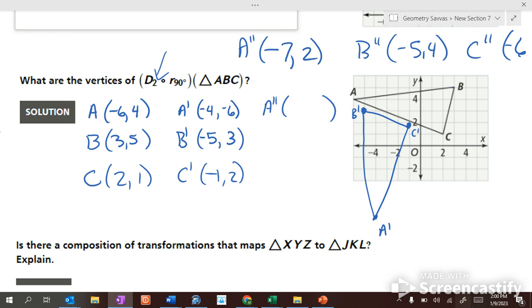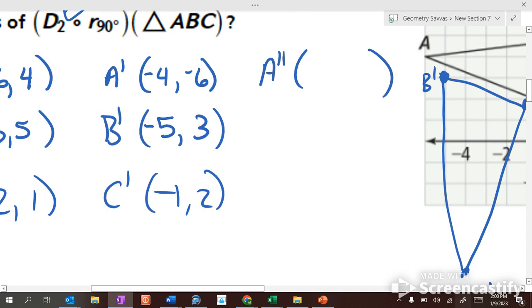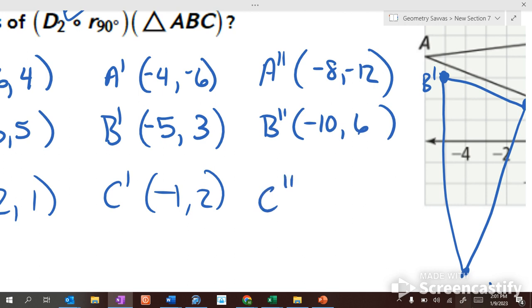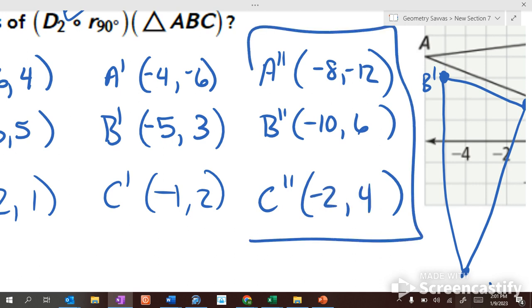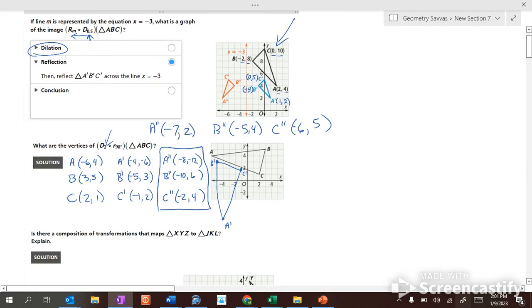Now we're going to dilate it with a scale factor of what? Two. So we're going to multiply each of these ordered pairs by two. So what should A double prime be? Preston, you can't see from back there. All right, Evelyn, help us out here, multiplying by two. Negative eight, negative twelve. Okay. B double prime, where's that going to end up? Curtis? Negative ten, six. C double prime? Negative two, four. Okay, those are our pairs after we did the similarity transformation.